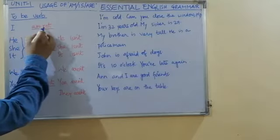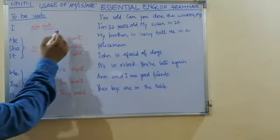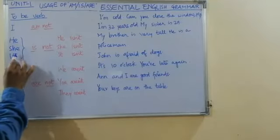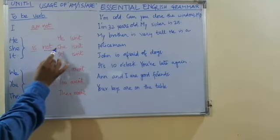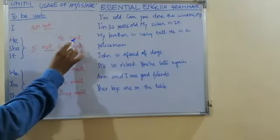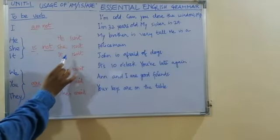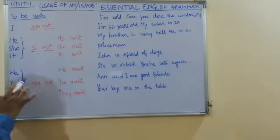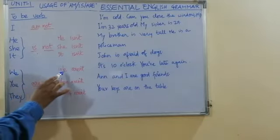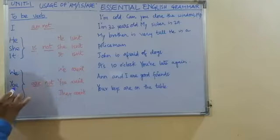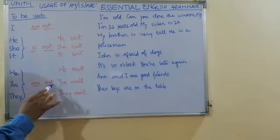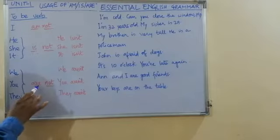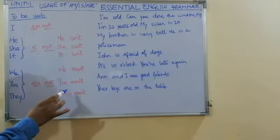With 'I' we use am not. I am not — short form: I'm not. With he, she, it we use is not. Short form: he isn't, she isn't, it isn't. With 'we' we use are not — short form: we aren't. With 'you' we use are not — short form: you aren't. With 'they' we use are not — short form: they aren't.